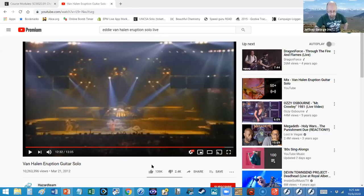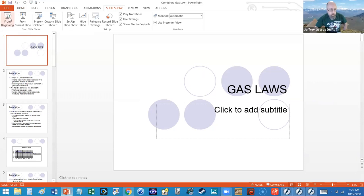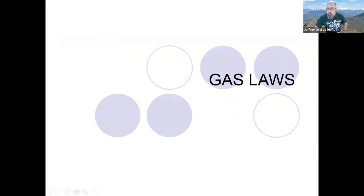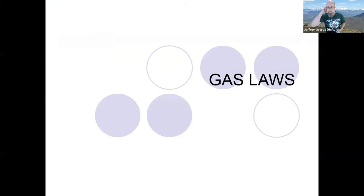All right, so on to actual chemistry stuff here. I want to talk to you today about our next major topic, one that you've already explored in your lab, but one that we're going to talk about in greater detail here. So we're going to talk about relationships between pressure, volume, and temperature. I want to get through this quickly because I want to work problems, and I've also already given up 20 minutes of class time.